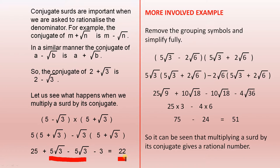So a more involved example, let's remove the grouping symbols and simplify fully. So here we have this surd here and that's the conjugate. So we multiply them together. That gets us that line there. When we remove the grouping symbols we have this line here. So that's 25 by 3 plus the square root of 9 is 3.